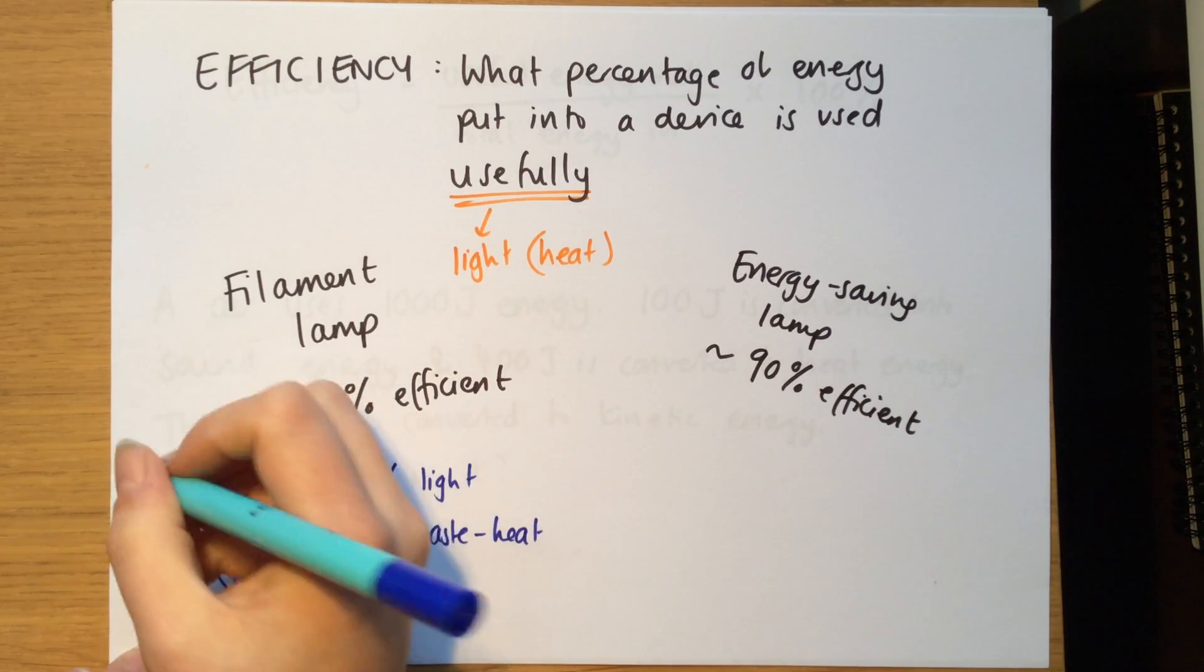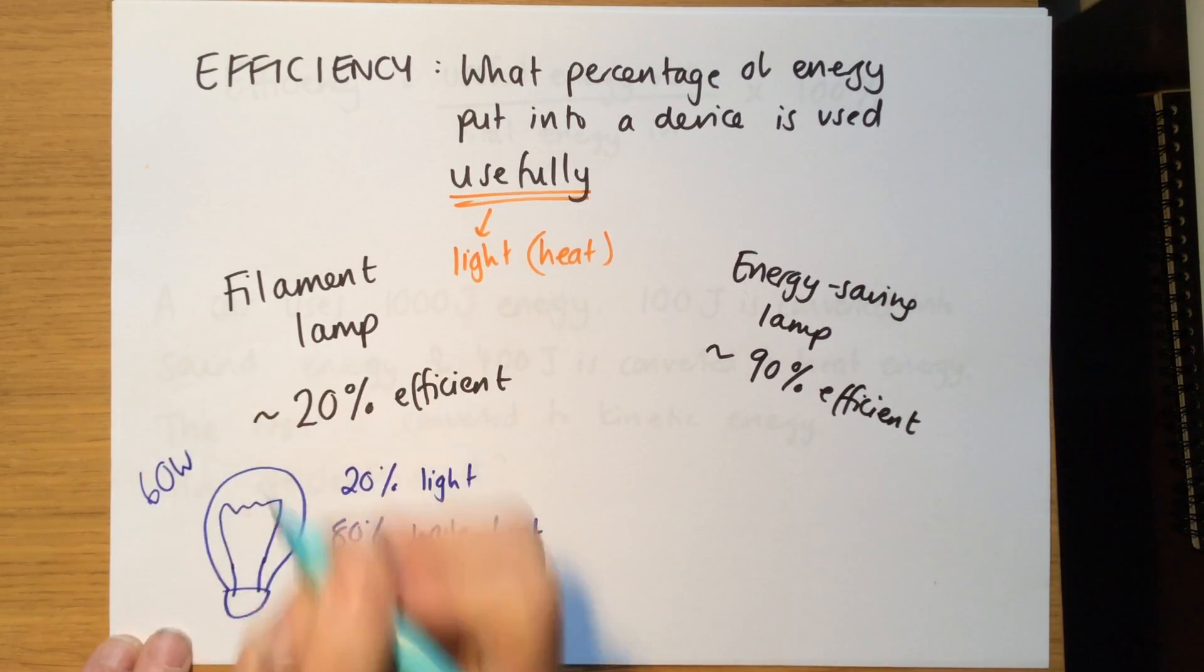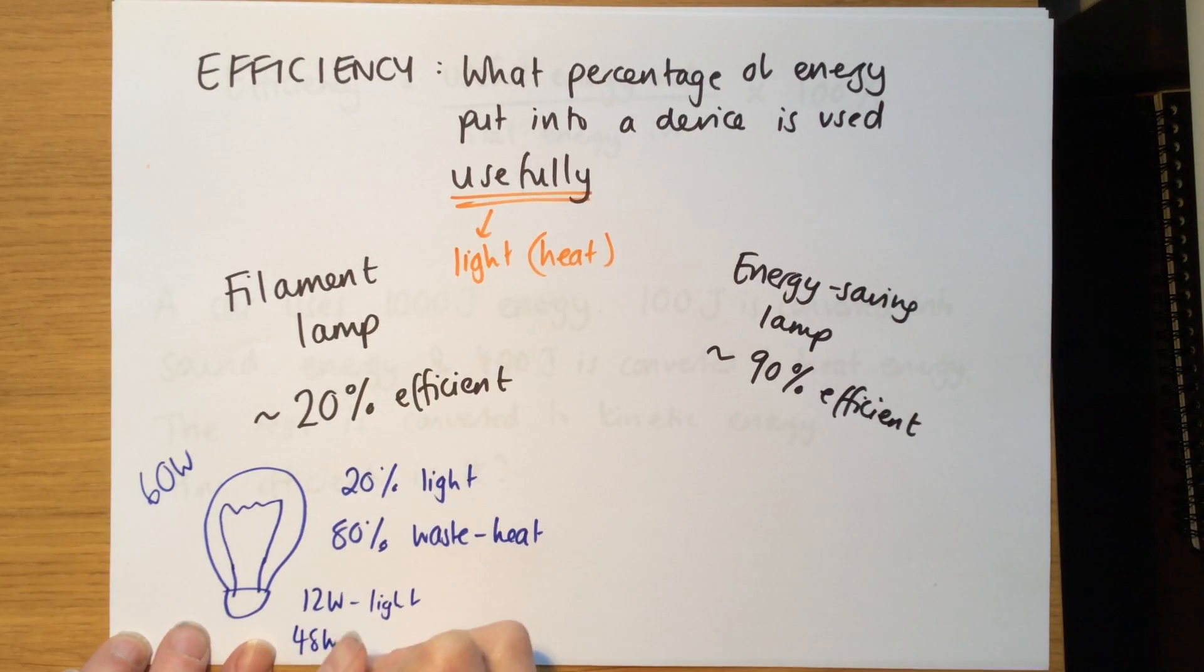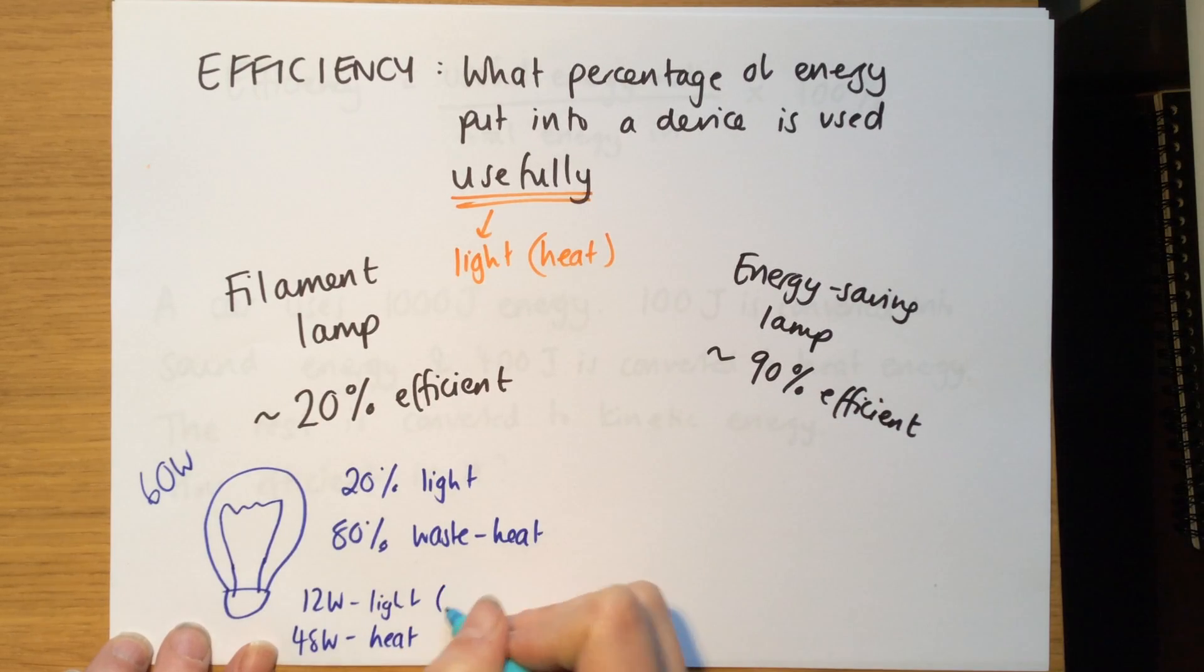So if this was, for example, a 60 watt light bulb, 20% of that, so that would be 12 joules per second, or 12 watts, would come out as light. And 80%, which is 60 minus 12, which is 48 watts, 48 watts would come out as heat. Or 12 joules per second, or 48 joules per second.